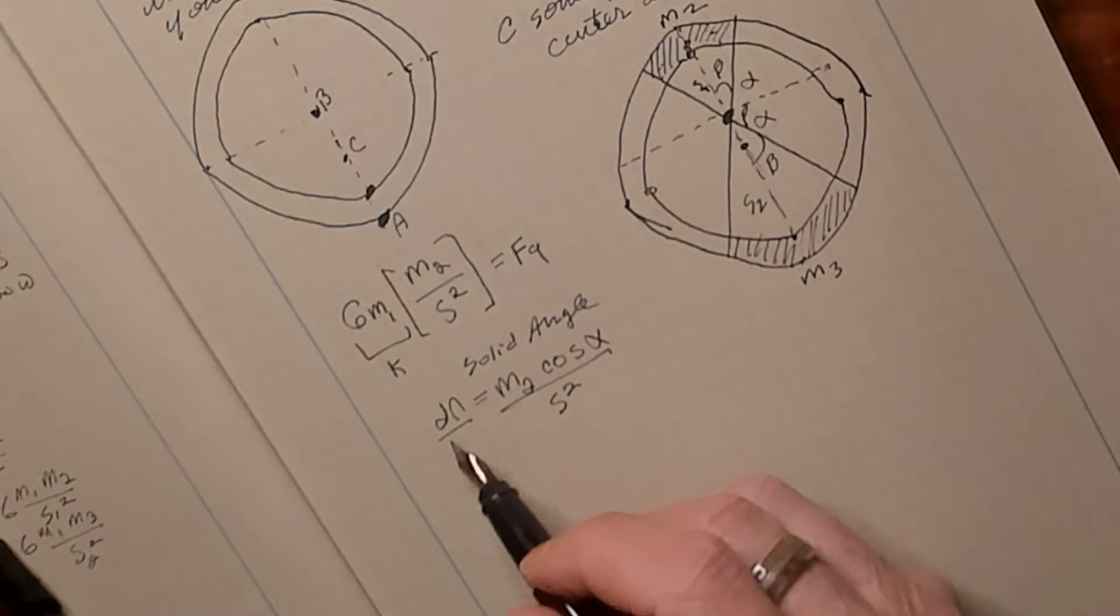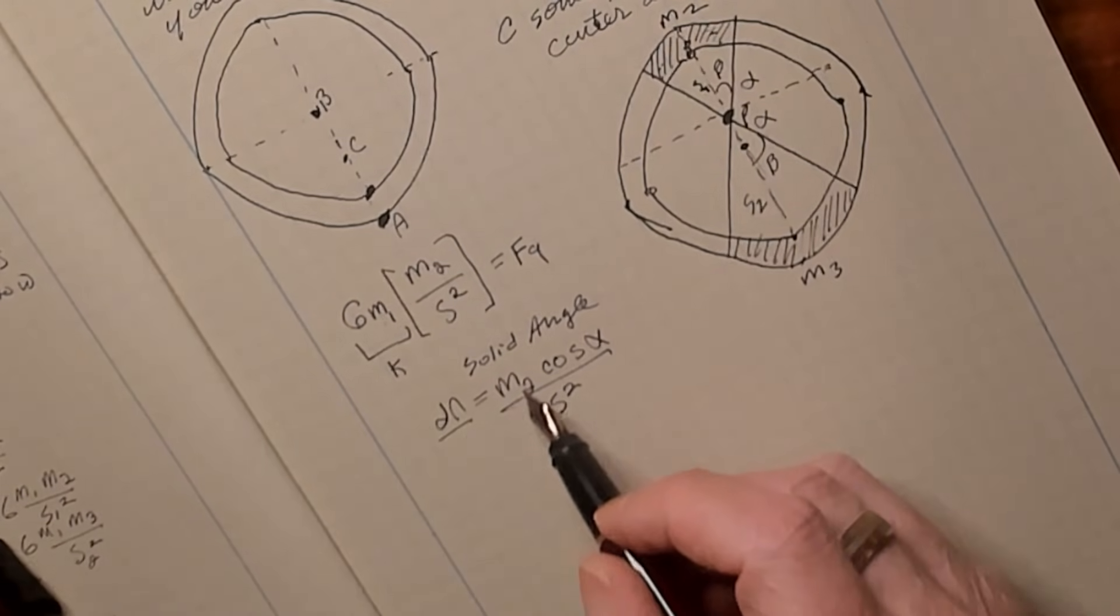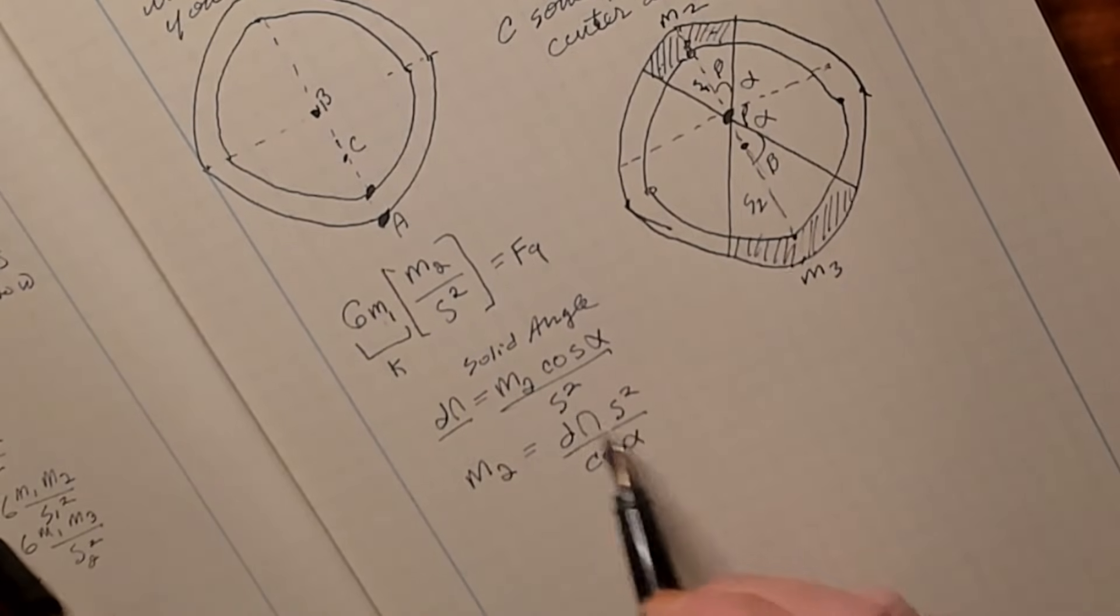But that's not really what we want. We don't want delta omega, we want the mass. So by rearranging this a little bit, we end up with this. So the mass equals delta omega times s squared over the cosine of alpha. You see how we just rearranged that.